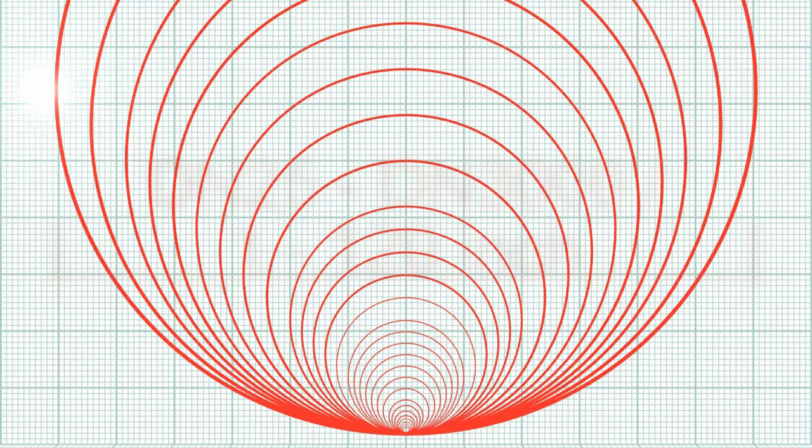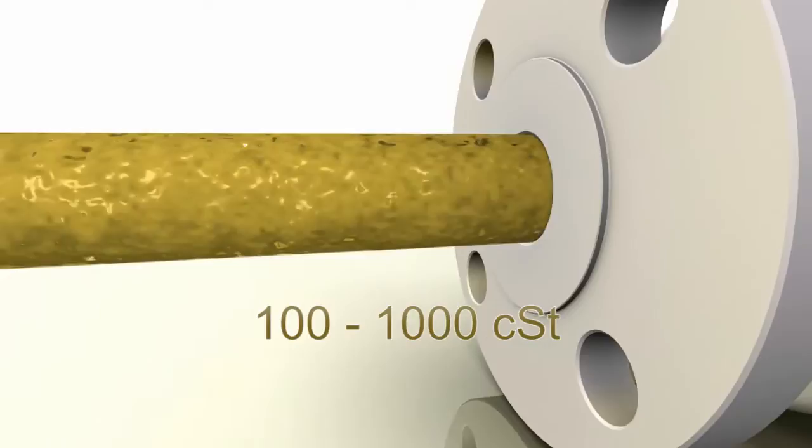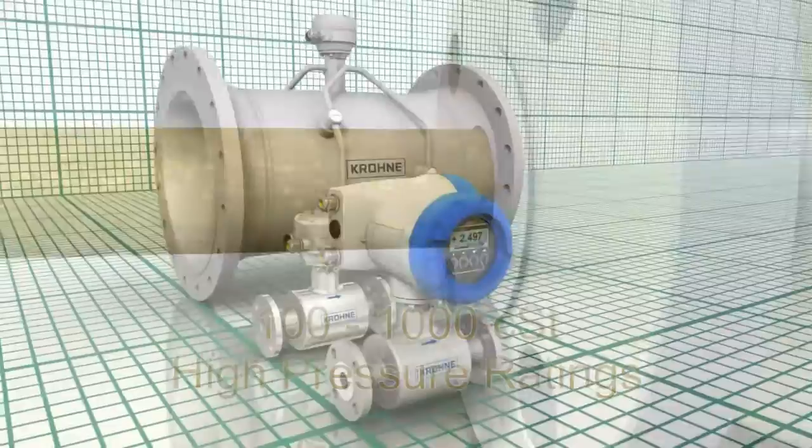High viscous liquid variants are available from 100 to 1000 centistokes for products like crude oil, heavy residues and long chain polymers, as well as high pressure rated versions over 400 bar.